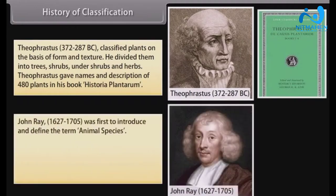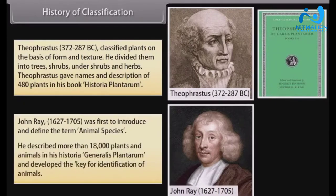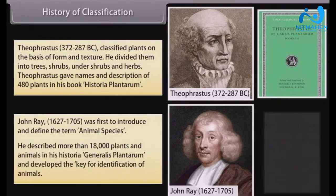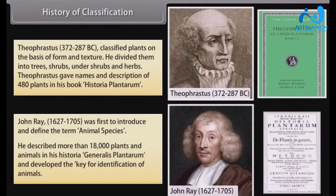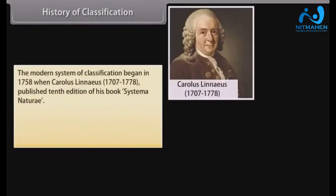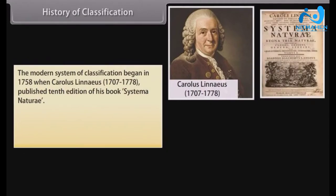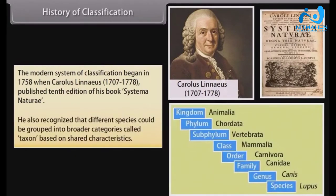John Ray (1627–1705) was the first to introduce and define the term 'species.' He described more than 18,000 plants and animals in his Historia Generalis Plantarum and developed a key for identification of animals. The modern system of classification began in 1758 when Carolus Linnaeus (1707–1778) published the 10th edition of his book Systema Naturae. He also recognized that different species could be grouped into broader categories called taxa, based on shared characteristics.